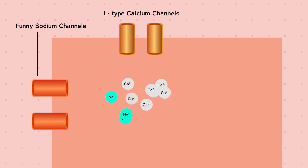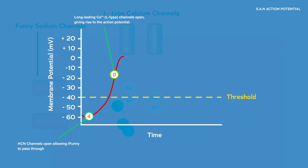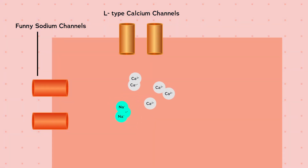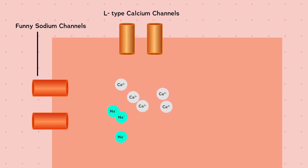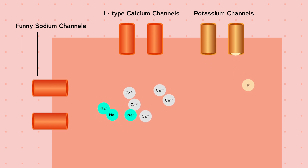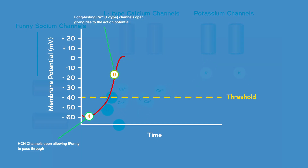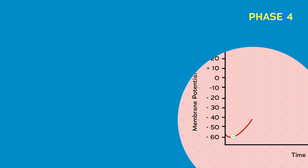As soon as the threshold potential of minus 40 millivolts is reached, the funny sodium channels close and L-type calcium channels open, allowing a large amount of calcium to flow in. This causes an upstroke in the action potential to slightly above zero millivolts. These channels are time-dependent, opening for a set period before closing. After about 150 milliseconds, the L-type calcium channels close, potassium channels open, and repolarization starts — the membrane potential becomes more negative until minus 60 millivolts is reached and the cycle repeats.